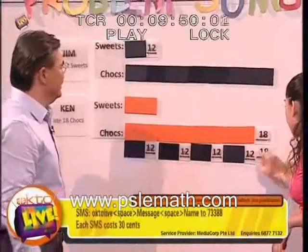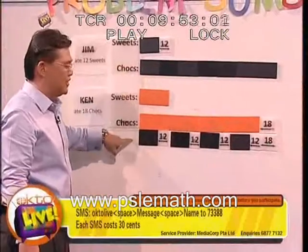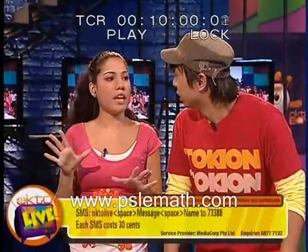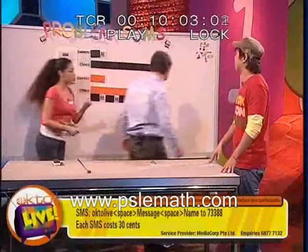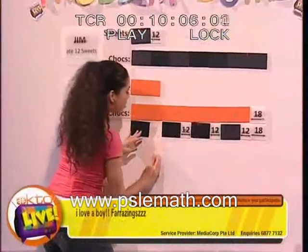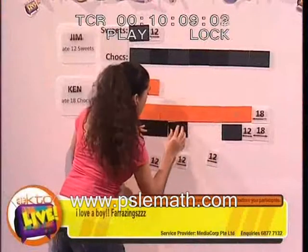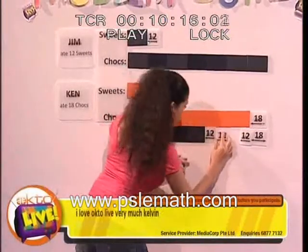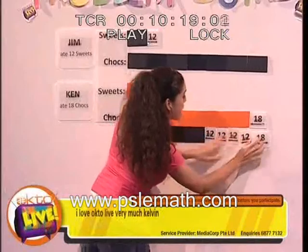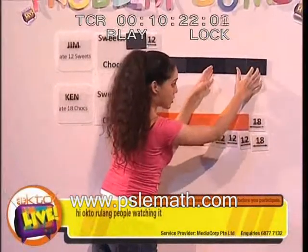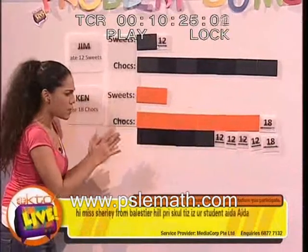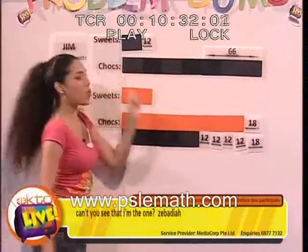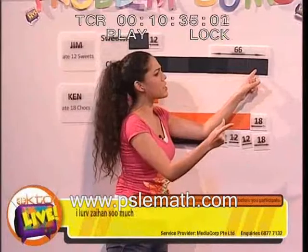Now if we do a comparison between this chocolate side and that chocolate side, we should be able to solve the question. So I'm going to take four of these blocks — these four blocks are equivalent to those four blocks — representing four units. Then 12 plus 12 plus 12 plus 12 plus 18 equals 66, which corresponds to three units. So three units equals 66.